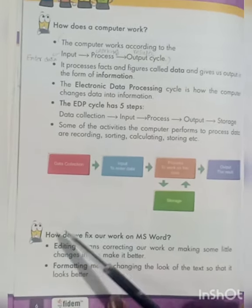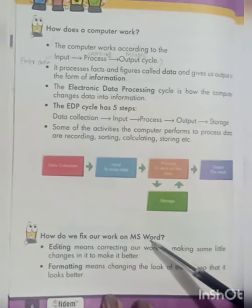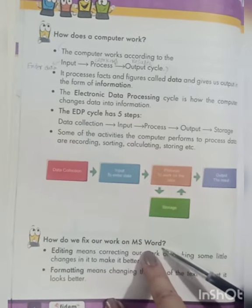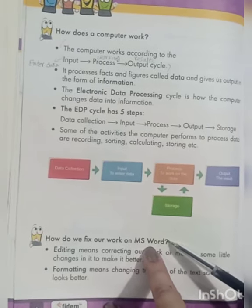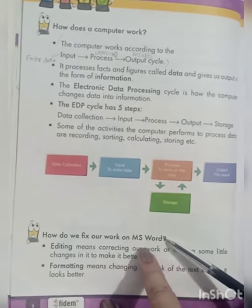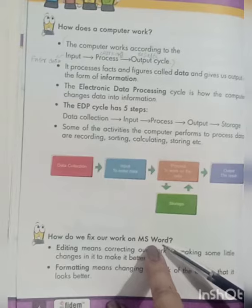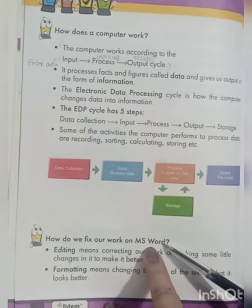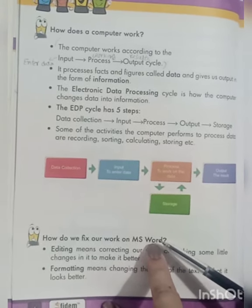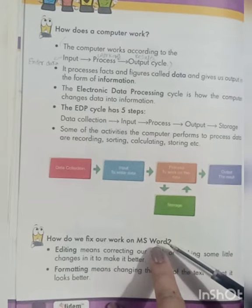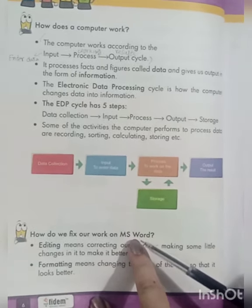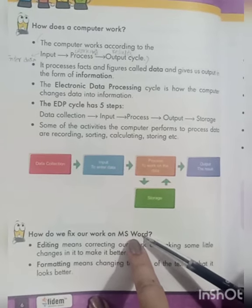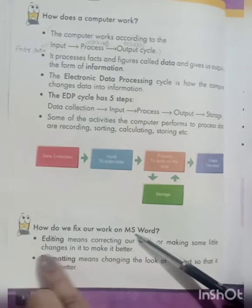Next is how do we fix our work on MS Word. In MS Word we can do our work using different tabs and different options. We can use our text and editing tools. Number 1 is Editing. Editing means correcting. Fix means accurate.